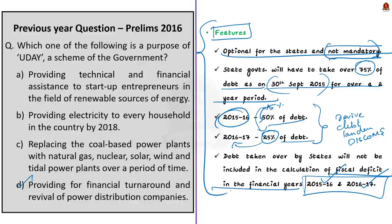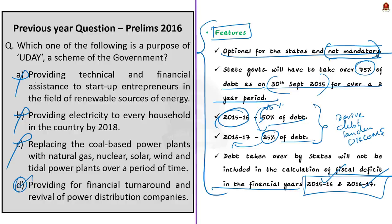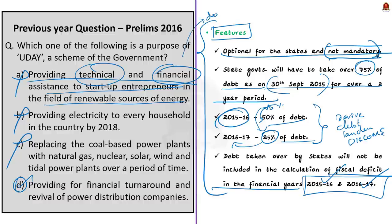Now you have to be very cautious here — solving a question does not alone include finding the right answer; it is also about eliminating the wrong answer. Option A says the purpose of UDAY scheme is to provide technical and financial assistance to startup entrepreneurs in the field of renewable energy. This is wrong — even though UDAY scheme strives for development of renewable energy, it does not provide any financial assistance to startup entrepreneurs.